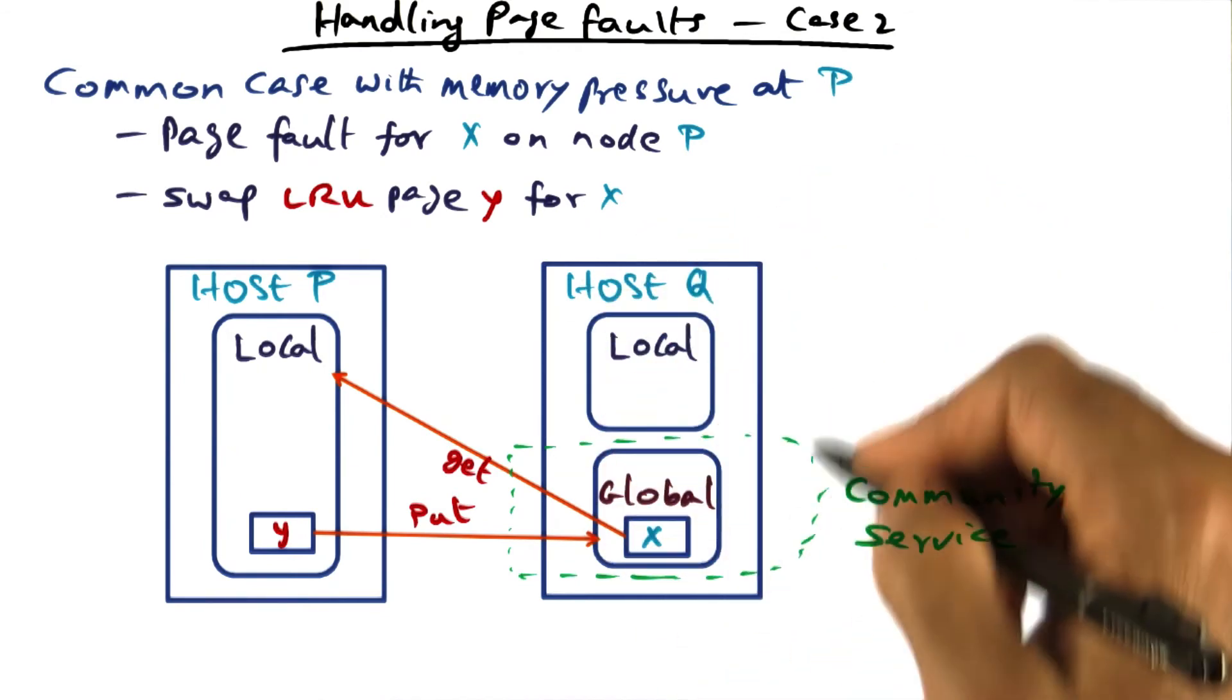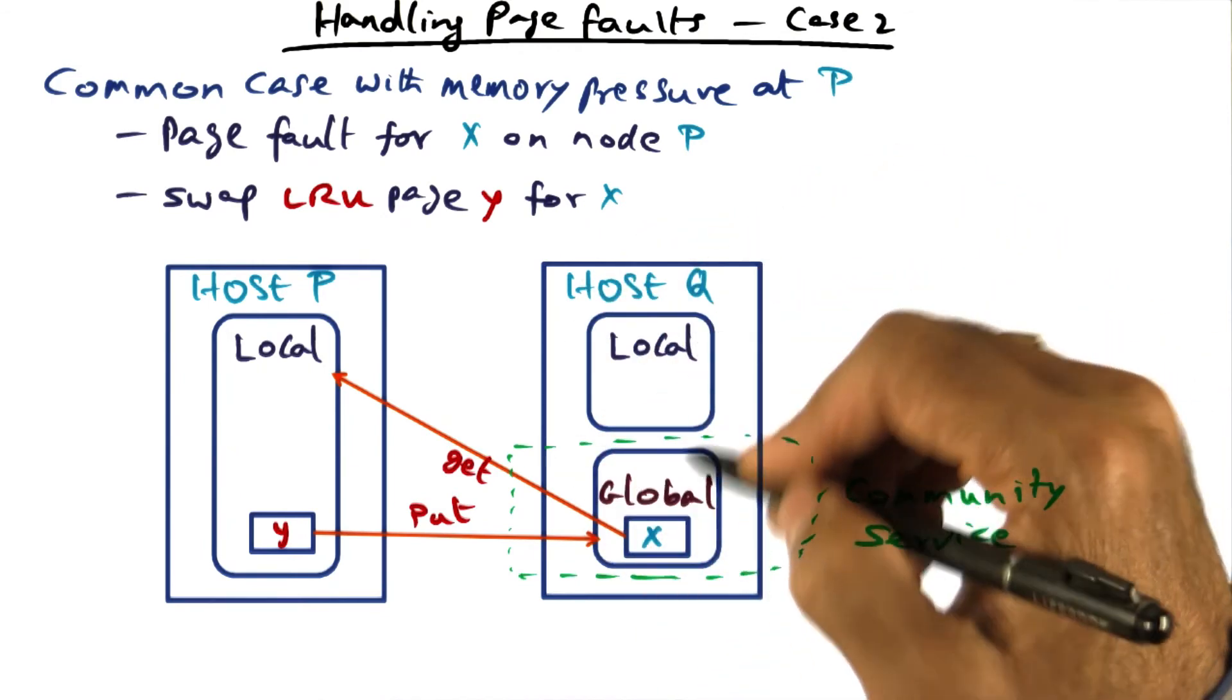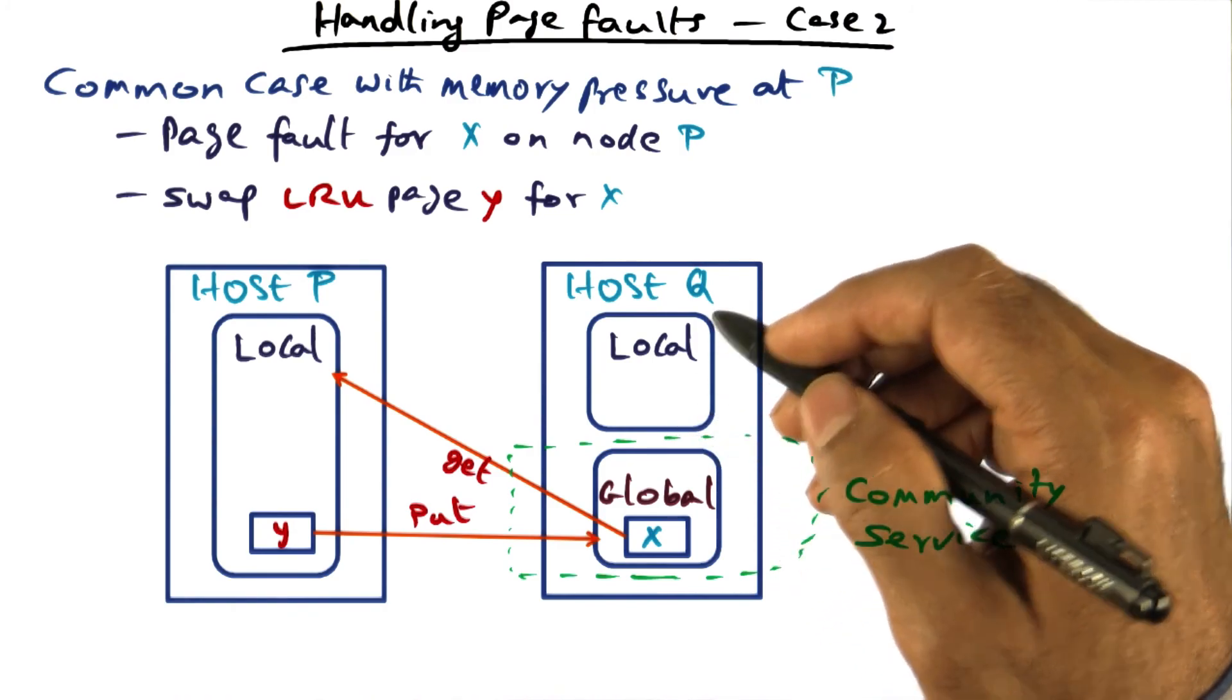And as in the previous case, there is no change on host Q as well in terms of the split between local and global.